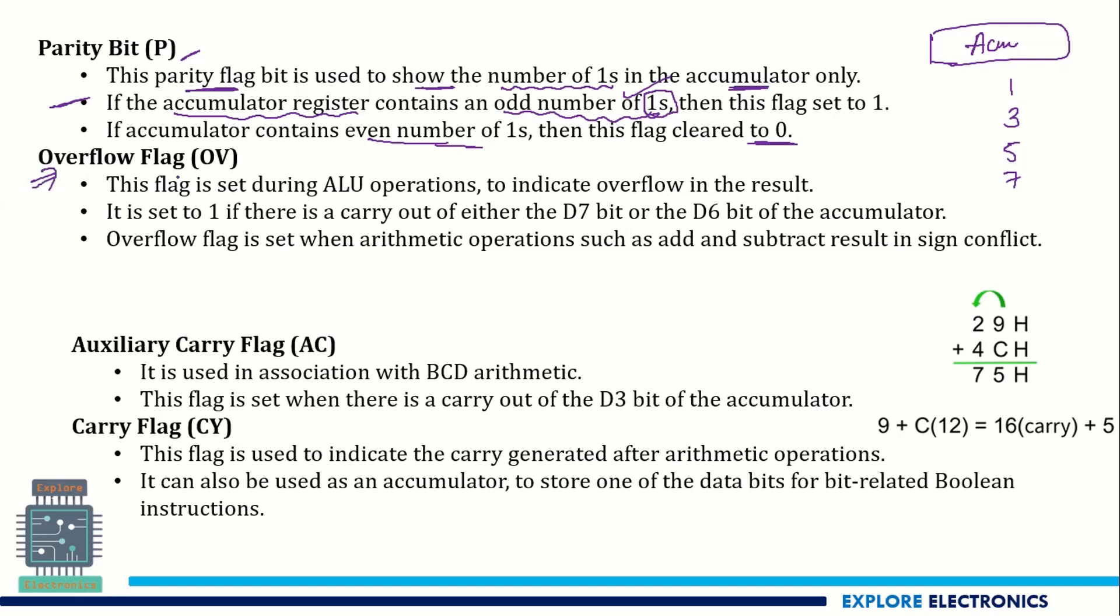Then what is overflow flag OV? This flag is set during ALU operations to indicate overflow of the result. Since the output of the ALU is 8 bit, the accumulator will hold that value. If there is any chance of overflow, then this overflow flag is going to be set. That is the extra bit we need to take out of the ALU.